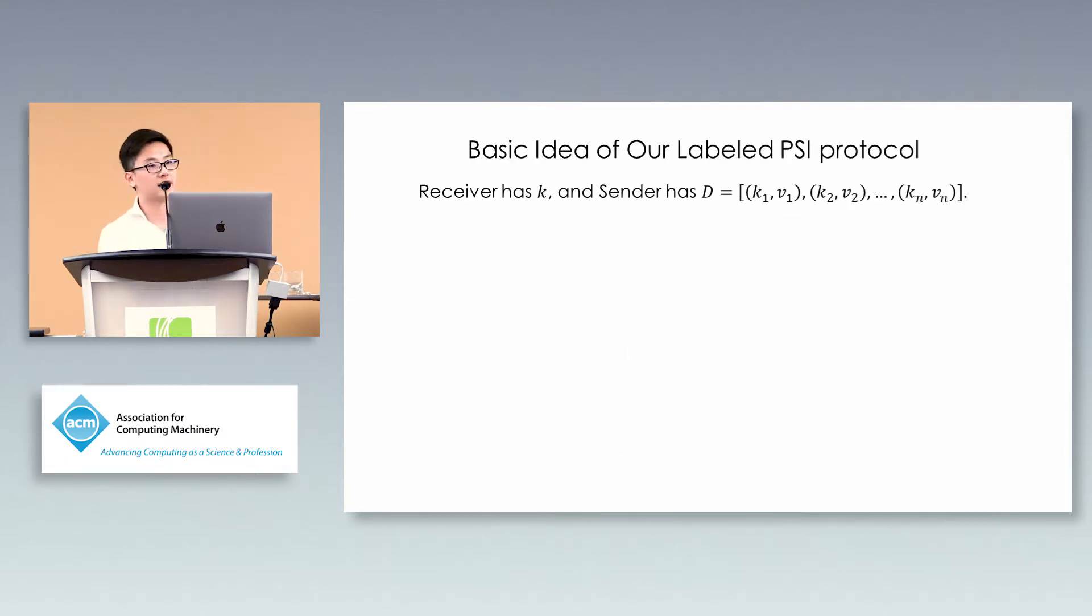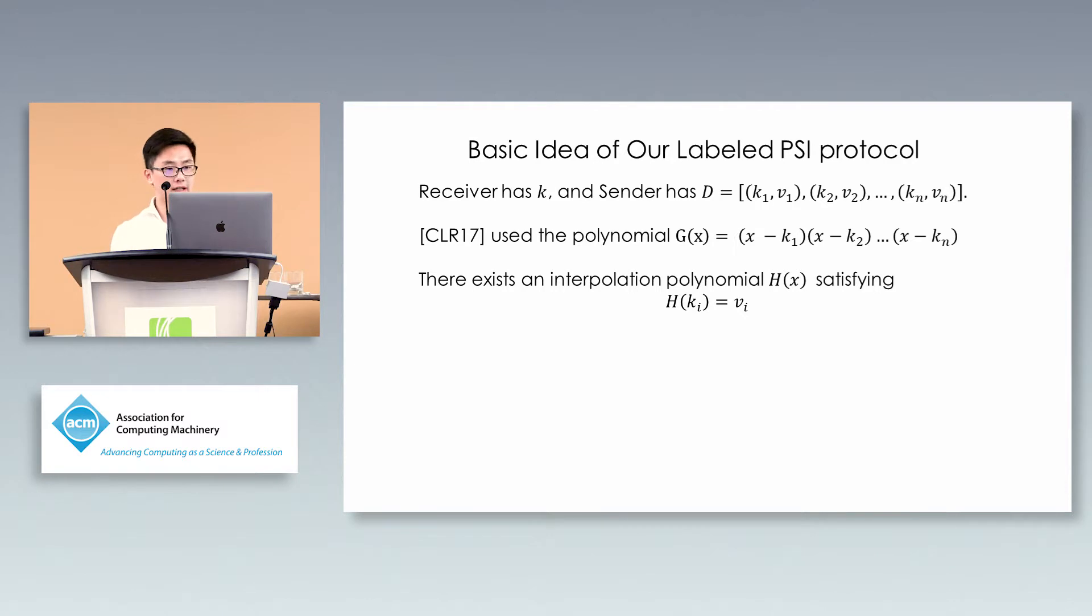What is the basic idea of our construction? This also happened in a previous paper. Say the receiver has one key and the sender has a database of key-value pairs. In the previous paper, for private set intersection we constructed and evaluated this polynomial that evaluates to zero for all keys in the database. You get zero if your key is in the database, and random stuff if not.